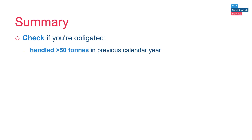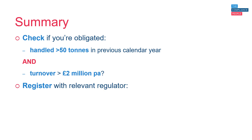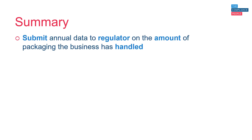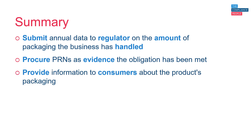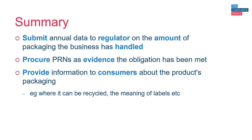Finally, in summary: check if you're obligated — has your company handled 50 tonnes or more of packaging materials or packaging in the previous calendar year, and does it have a turnover of more than £2 million a year? If so, register with the relevant regulator, either directly or by joining a compliance scheme. Submit annual data to the regulator on the amount of packaging handled, procure PRNs as evidence that the obligation has been met, and you may need to provide information to consumers about the product's packaging — for example, where it can be recycled and the meaning of labels.